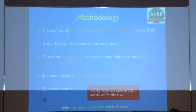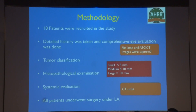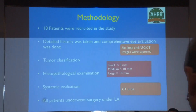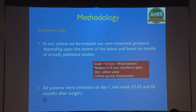The study was done at an Army Hospital Research and Reference center. It was a prospective cohort study conducted over 18 months. Recurrent cases of OSSN were included in the study group, and recently diagnosed cases were excluded. Eighteen patients were recruited. Detailed history was taken, comprehensive eye evaluation was done, histopathological examination was performed where biopsy was indicated, and systemic evaluation including lymph node examination was conducted. Our treatment protocol was based on the extent of the lesion: wide excision with cryotherapy for small lesions, interferon for medium lesions, and exenteration for cases with orbital spread.